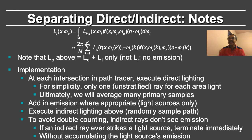Then you will execute the indirect lighting, where you randomly sample a path. To avoid double counting, the indirect rays will not include emission. Therefore, if an indirect ray ever strikes a light source, it terminates immediately without accumulating the light source's emission. This is a very simple algorithm you can implement in your path tracer, and simply by separating direct and indirect, you will get a significant performance improvement.